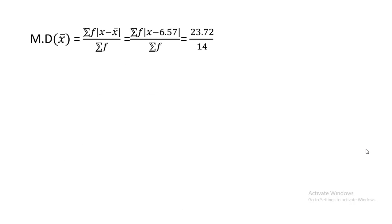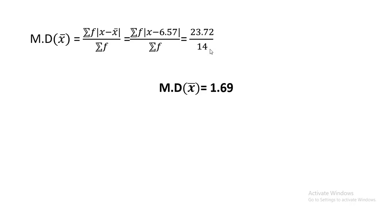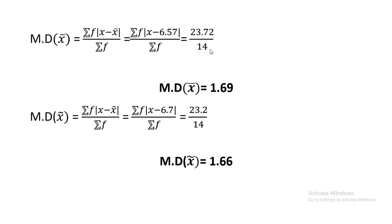Finally, we put all these values into the formula. 23.72 divided by 14 gives mean deviation about mean = 1.69, and for mean deviation about median the value is 1.66.